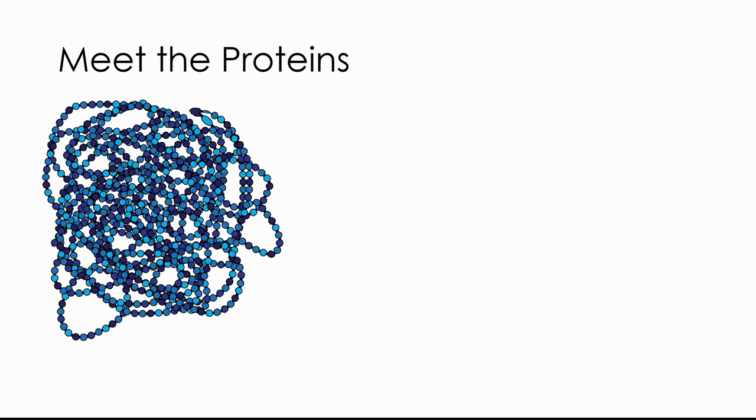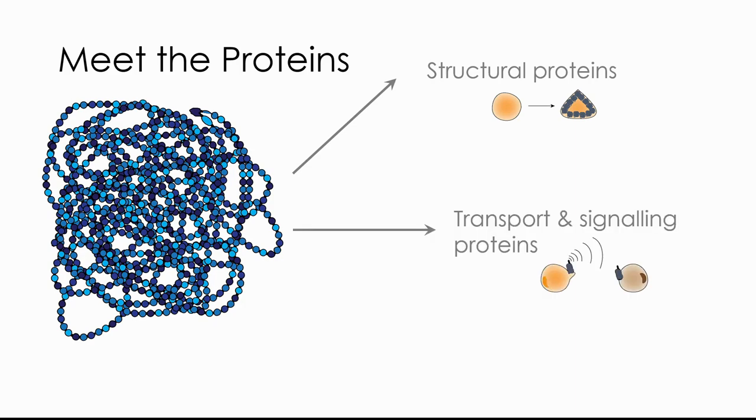We can identify inside the cells three different types of proteins with three different functions. The first one are structural proteins, which are responsible for giving the shape to the cell. We have transport and signal proteins, which allow cells to communicate with each other. And finally, we have our enzymes, the focus of the next part of the talk.